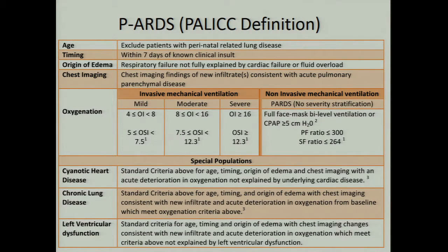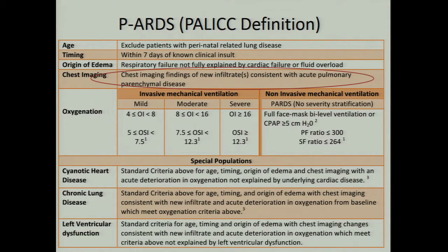For patients not on invasive mechanical ventilation but on CPAP, you cannot obtain an OI, so we used the Berlin criterion of CPAP greater than five. There were extra criteria for cyanotic heart disease, chronic lung disease, and left ventricular dysfunction — essentially, if there was a change from baseline, those criteria could classify patients as having ARDS. One important change was that the bilateral versus unilateral infiltrate gray area was removed — any new infiltrate qualifies for pediatric ARDS.